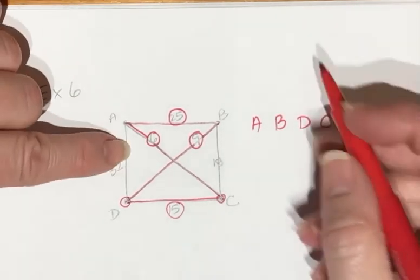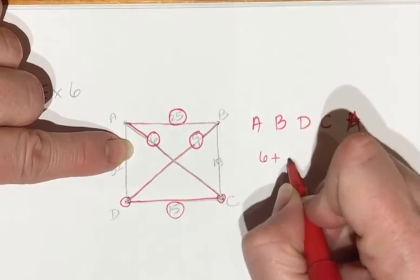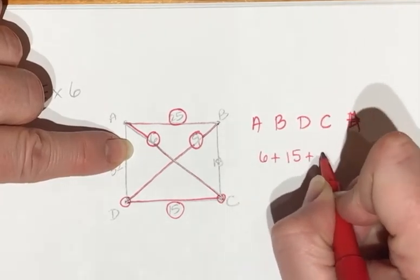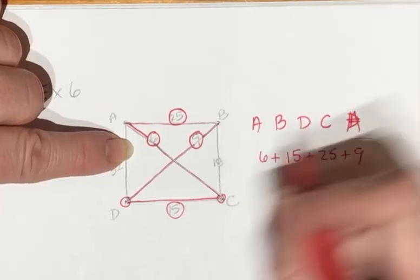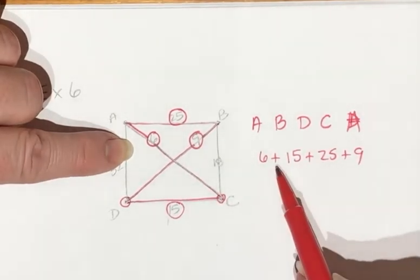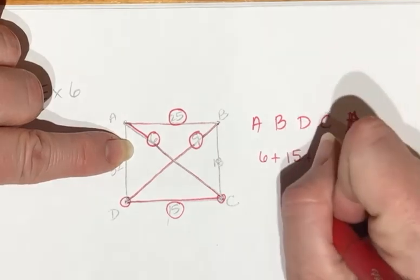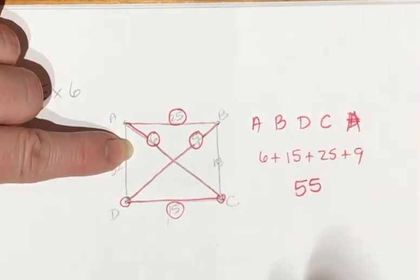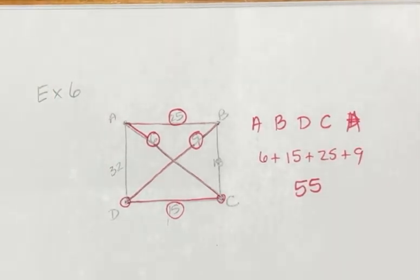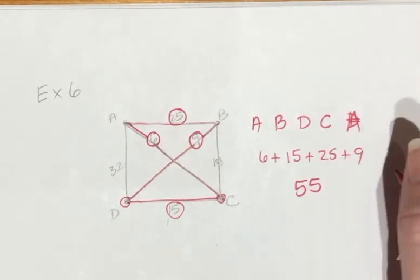And then my lengths are six, 15, 25, and nine. So 20, 30, 40, 55. And this was in minutes.